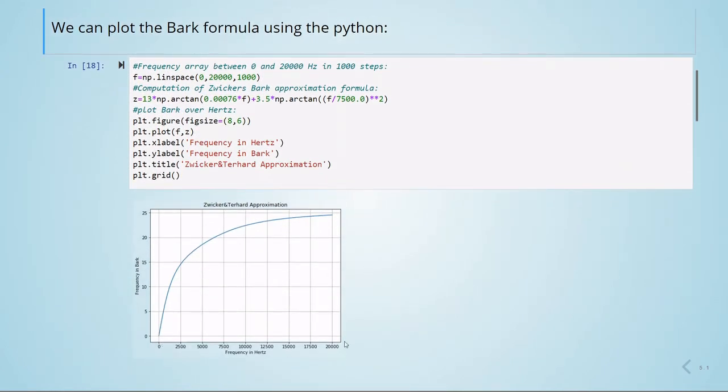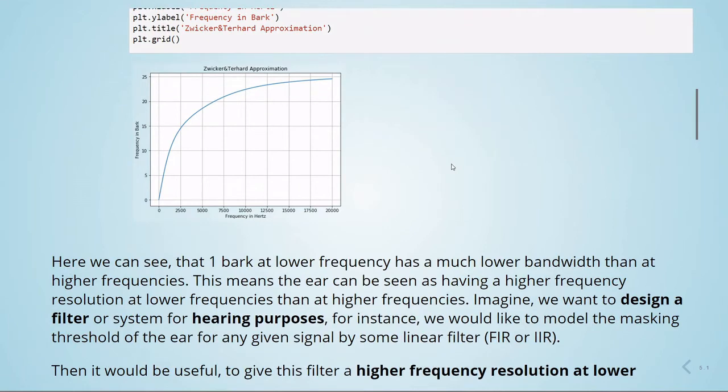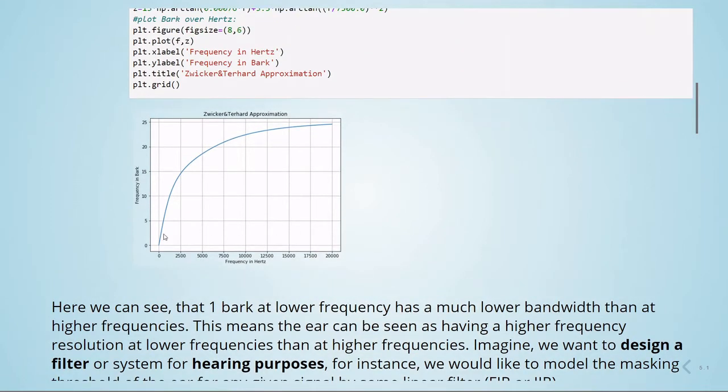Here we have the frequency in Hertz and here the equivalent frequencies in bark. We can see that one bark at lower frequency has much lower bandwidth than at higher frequencies.